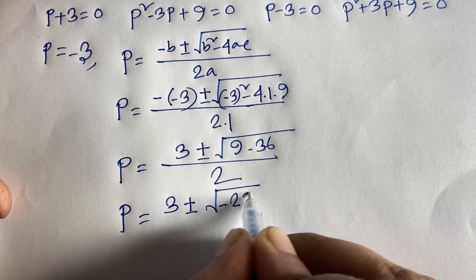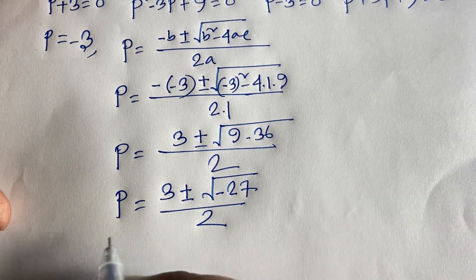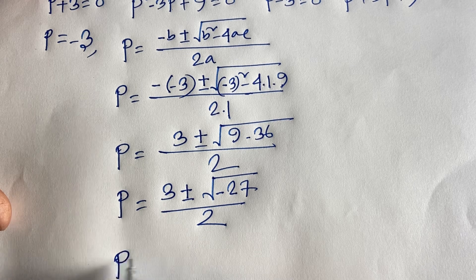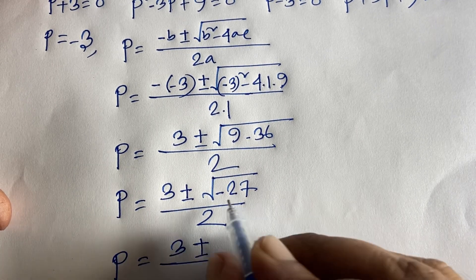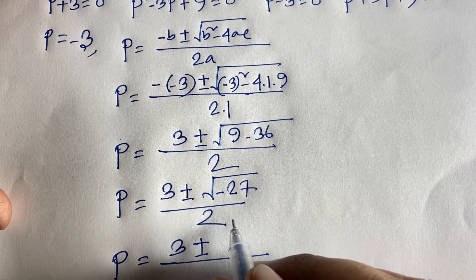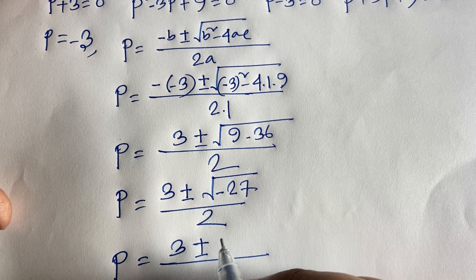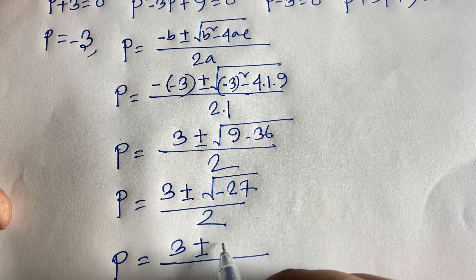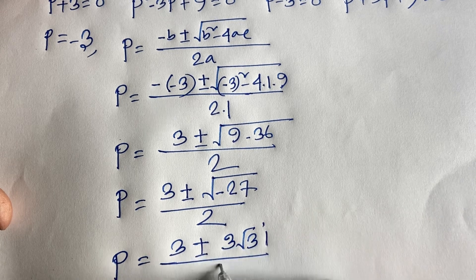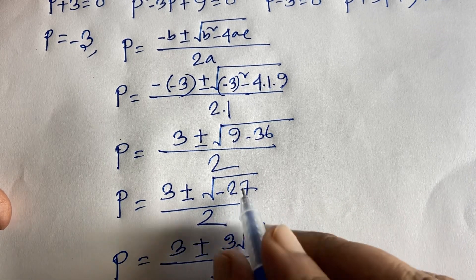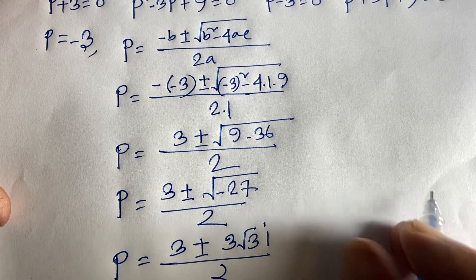Since √(−27) = √(9 × 3) × i = 3√3 · i, we get p = (3 ± 3√3 · i) / 2. Similarly for p² + 3p + 9 = 0 with b = 3: p = (−3 ± 3√3 · i) / 2.